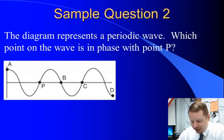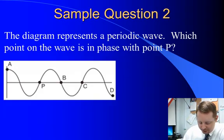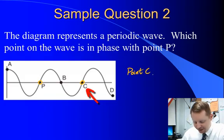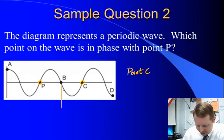Here we have a periodic wave. Which point on the wave is in phase with point P? It means we have to find the same point on another wave. Well, P is on the rise right as it crosses the baseline. So I see that again over here at C. So I would say that point C is in phase with point P. If we wanted to go 180 degrees out of phase, we'd have to go over here to B directly between them.